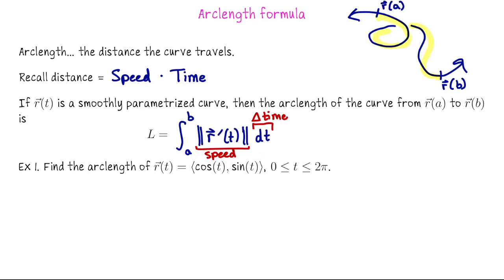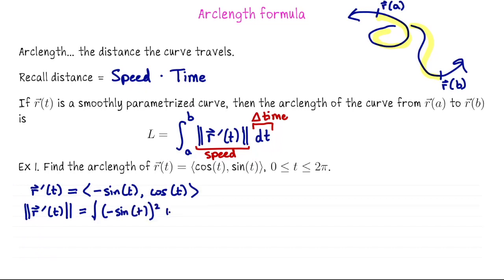To check that with this formula, let's go ahead and compute the velocity vector. So r prime of t is going to be negative sine of t cosine of t. That tells us that the speed along this parametrization is the length of r prime. So that's going to be the square root of negative sine of t squared plus cosine squared. So we get square root of 1, which is 1.